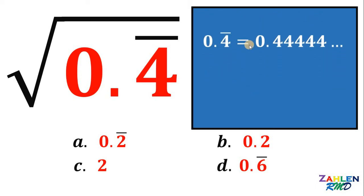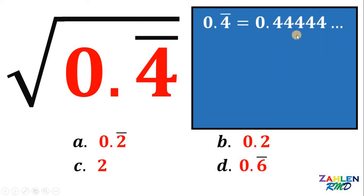We know that 0.4 repeating is equivalent to 0.44444 forever. The question now is, how can we get the square root of this number? Can we convert this number into something else? Let's see. Let x be equal to 0.44444 forever.